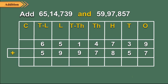Step 2: Add the digit at the ones place. 9 plus 7 is equal to 16 ones, which is equal to 1 ten plus 6 ones. So we write 6 in the ones column and carry forward 1 to the tens column.